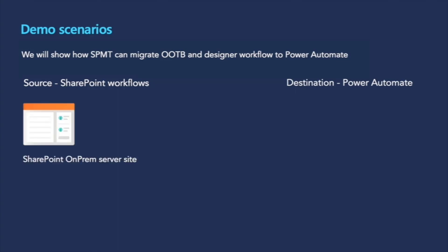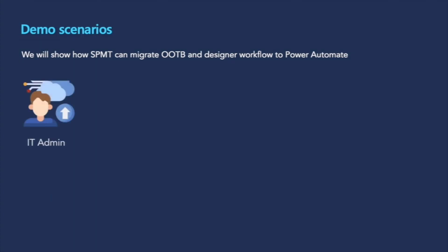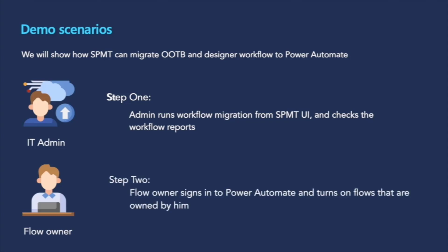The source is a SharePoint on-premises server site with workflow configuration. The destination is a SharePoint Online site and Power Automate. There are two users in the demo: the company IT admin who runs the migration tool, and the owner Alex who is the owner of the destination flows. The admin takes two steps: first, the admin runs workflow migration from the SPMT UI and checks the workflow reports. Second, Alex signs in to Power Automate and turns on migrated workflows.